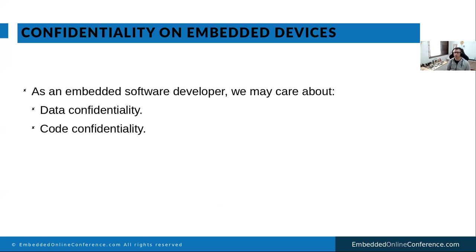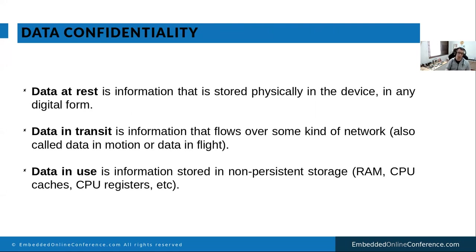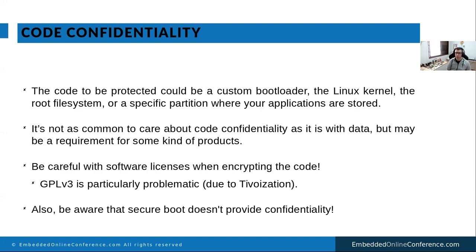When we think about confidentiality, we need to think about data confidentiality and code confidentiality. For data, we have basically three kinds: data at rest — stored on devices like flash memory, SD card, or eMMC; data in transit — communication data sent to a remote server or machine; and data in use — data currently in memory, CPU registers, or cache. Data in use is usually solved by hardware. For data at rest and data in transit, we can solve this in software — that's our main focus.